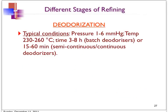Let's look at some typical conditions in the deodorizer. The pressure is very low — the process is done essentially under vacuum. The temperature is very high, between 180 to 200 degrees Celsius. The time is between 3 to 8 hours for batch deodorizers, or much shorter — between 15 to 60 minutes — for semi-continuous and continuous deodorizers.